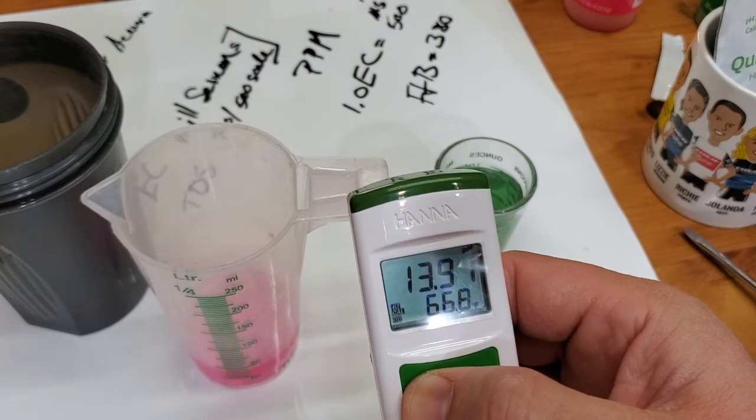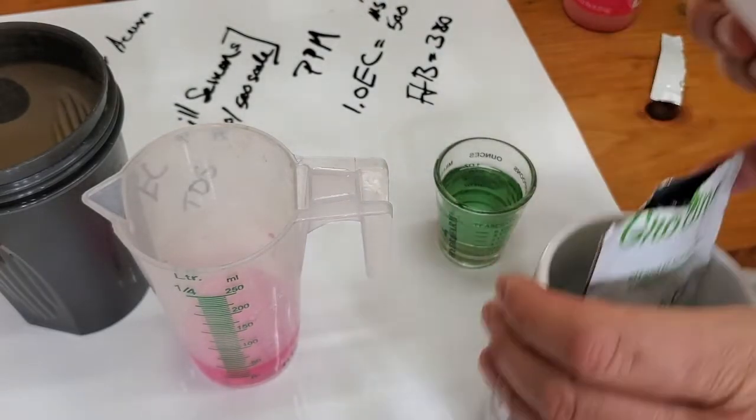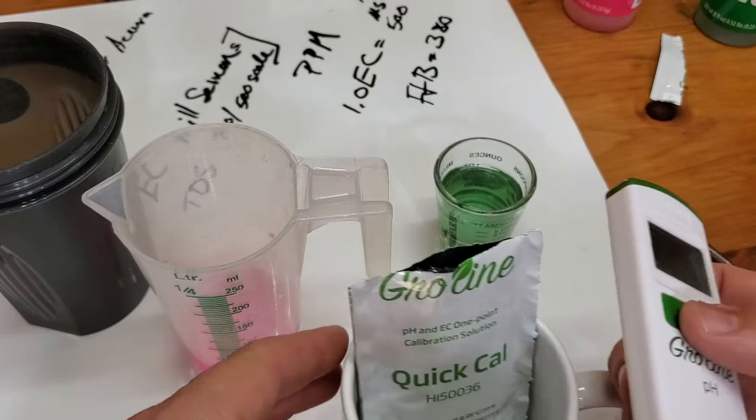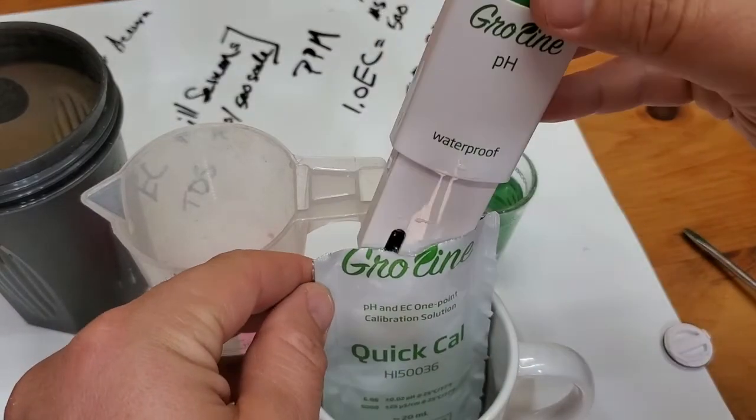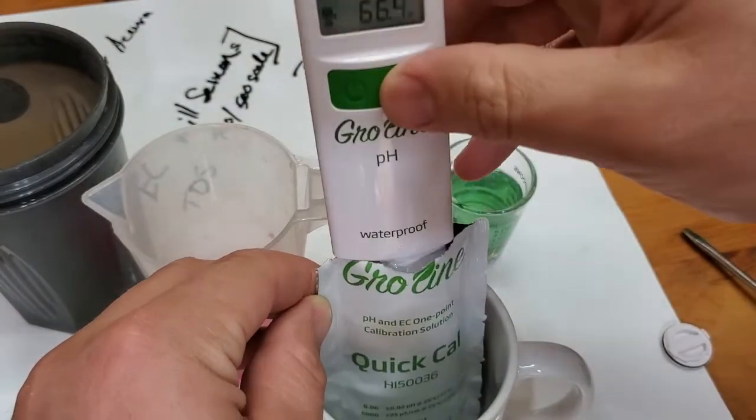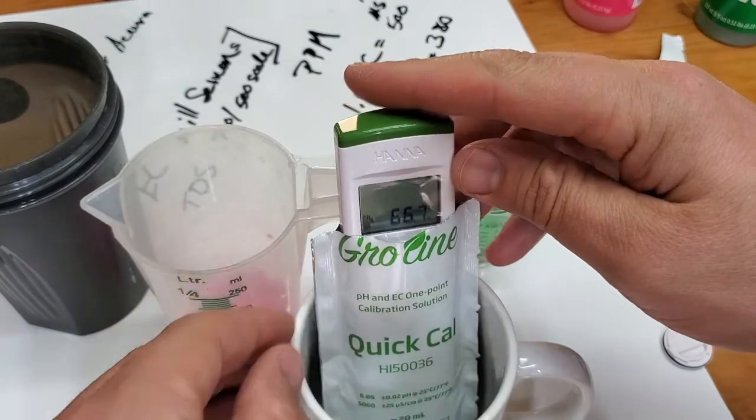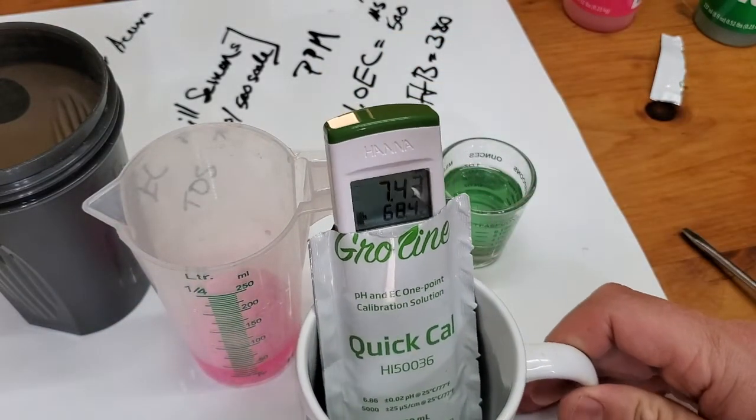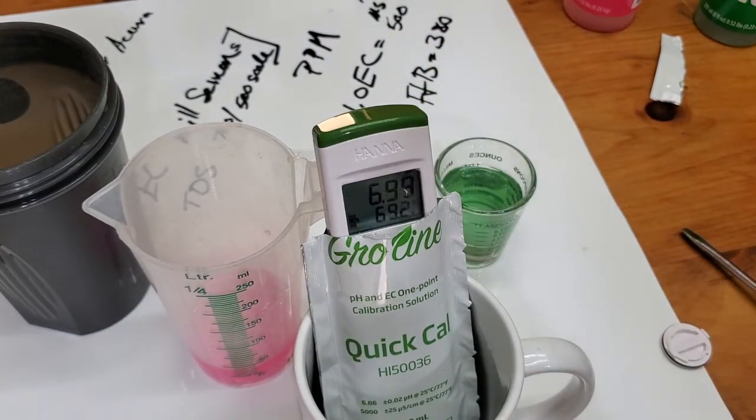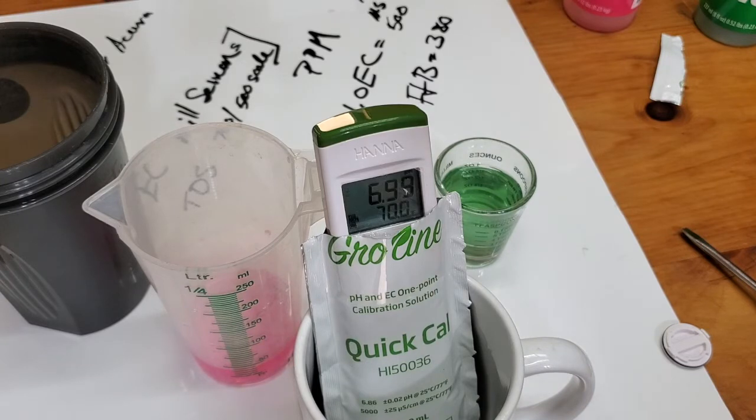Back into our Quick Cal solution, let it run its cycle. Once it's done, it'll be quickly calibrated. So that's both ways to calibrate the Hanna Grow Line 9811-8.